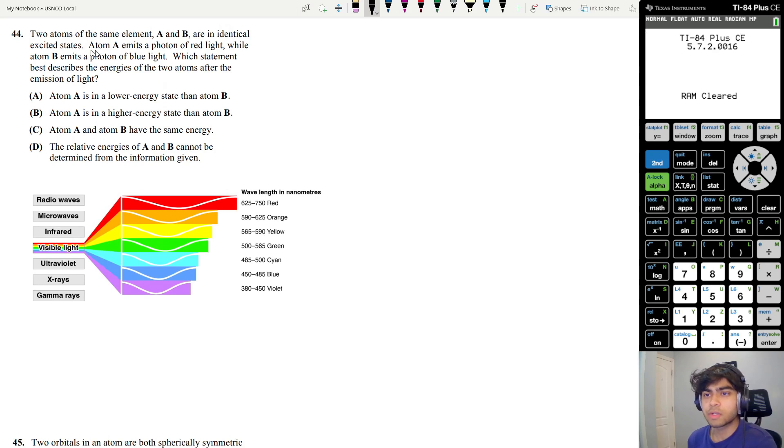Let's move on to question 44. Two atoms of the same element A and B are in identical excited states. Atom A emits a photon of red light while atom B emits a photon of blue light. When an atom emits something, it's emitting energy.